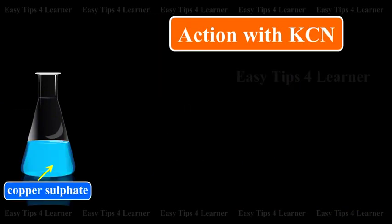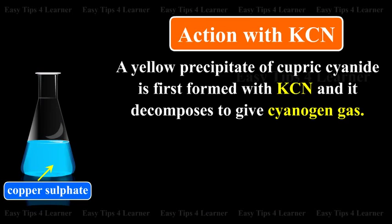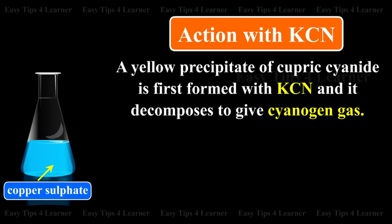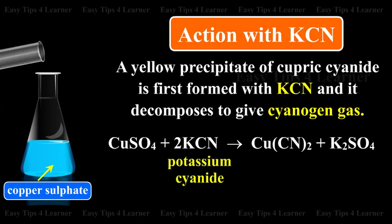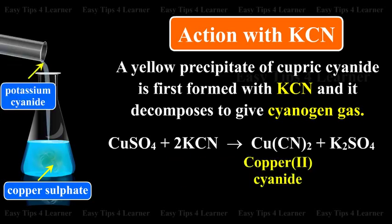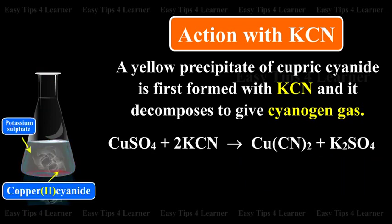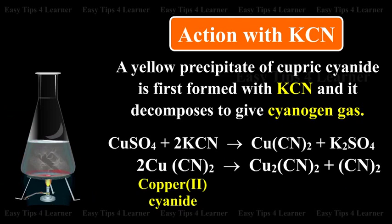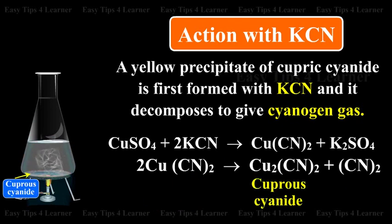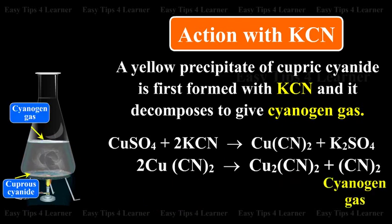Action with potassium cyanide: A yellow precipitate of cupric cyanide is first formed with potassium cyanide, and it decomposes to give cyanogen gas. Copper sulfate plus potassium cyanide gives copper(II) cyanide plus potassium sulfate. Copper(II) cyanide then gives cuprous cyanide plus cyanogen gas.